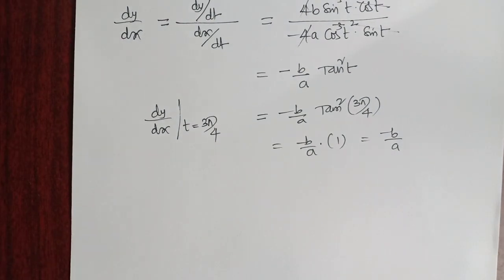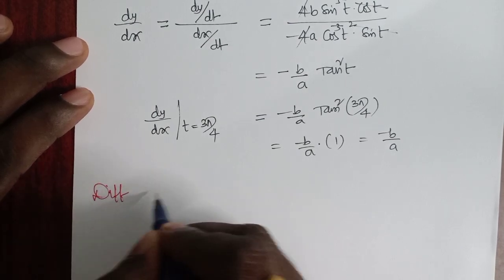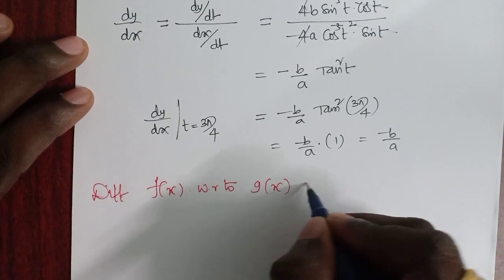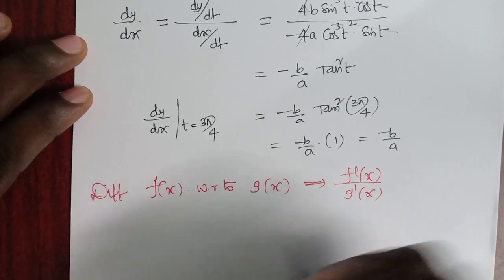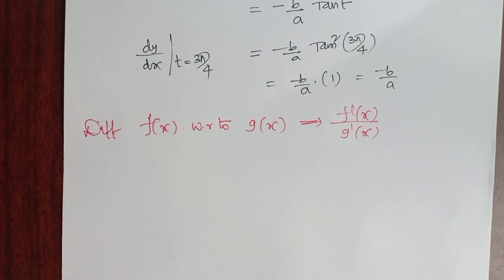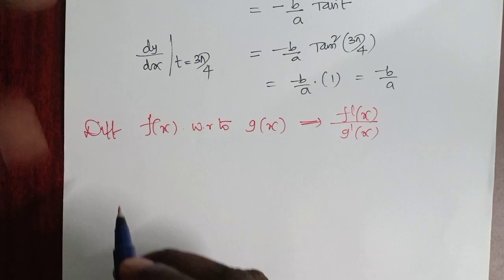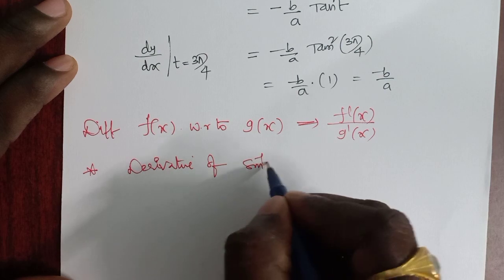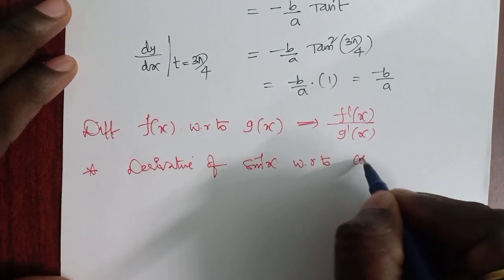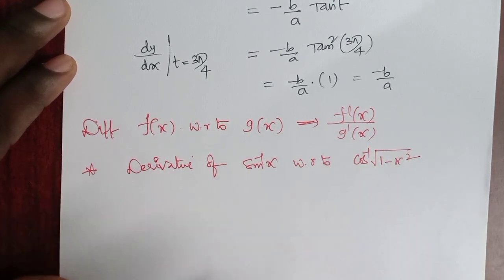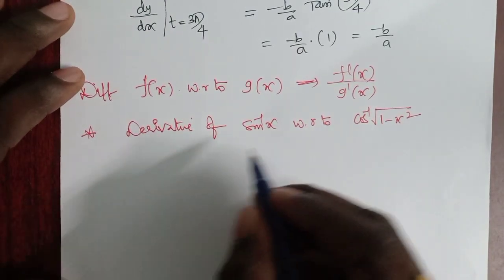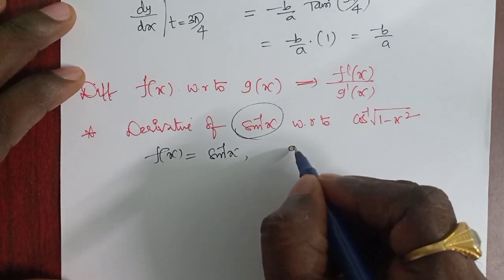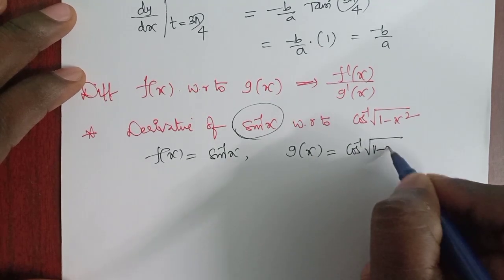The next type is differentiating f(x) with respect to g(x), which equals f'(x)/g'(x). Consider: differentiate sin⁻¹(x) with respect to cos⁻¹(√(1−x²)). Here f(x) = sin⁻¹(x) and g(x) = cos⁻¹(√(1−x²)).